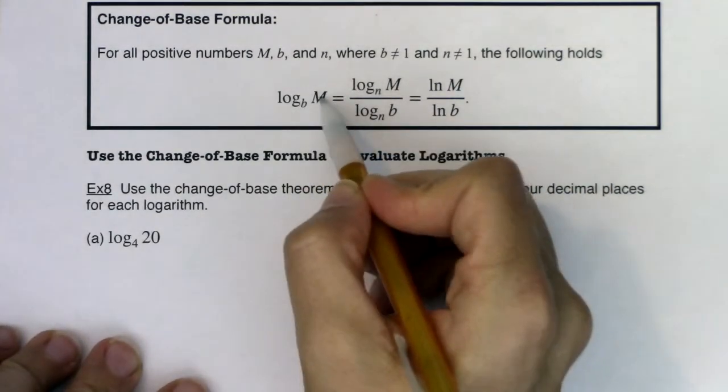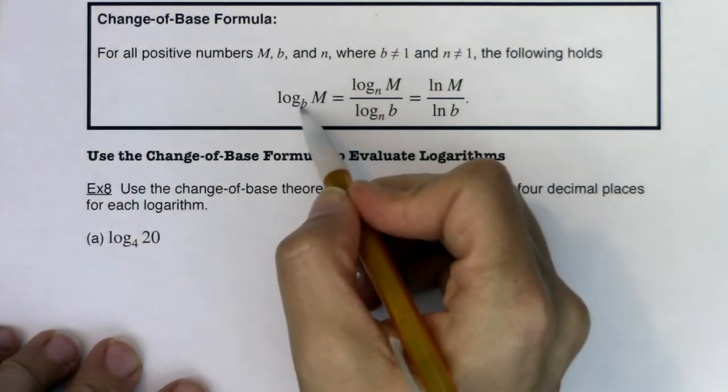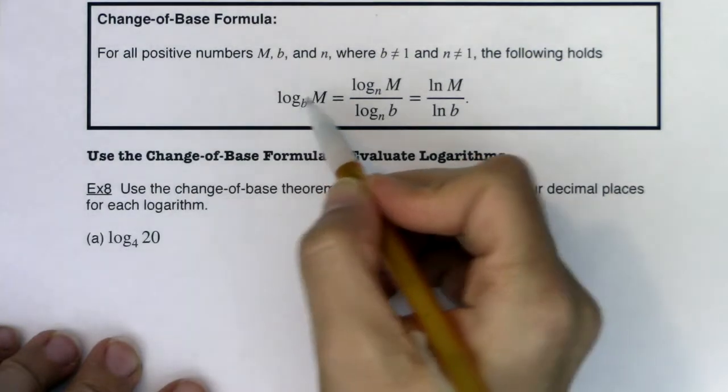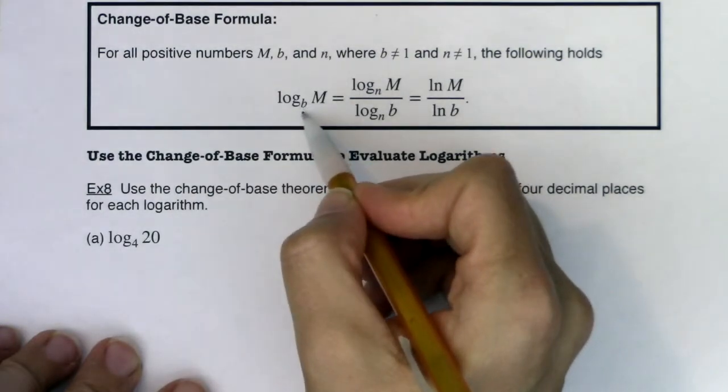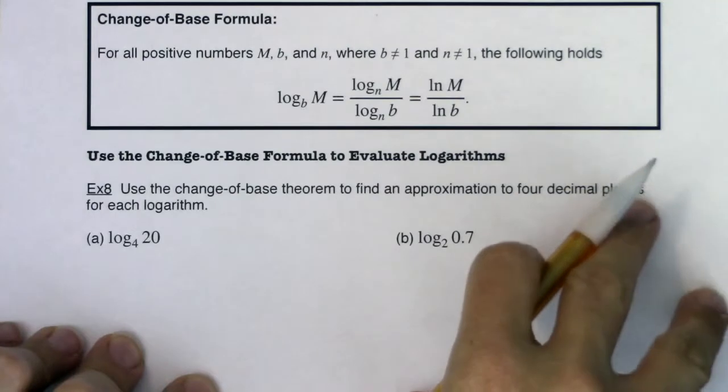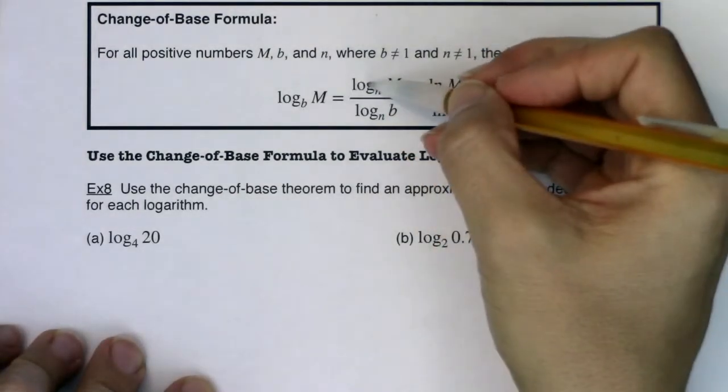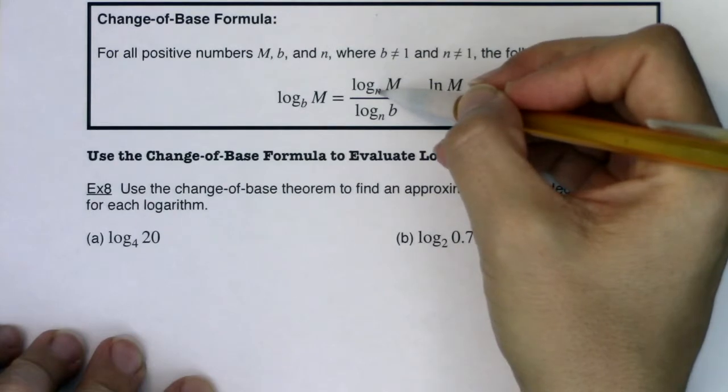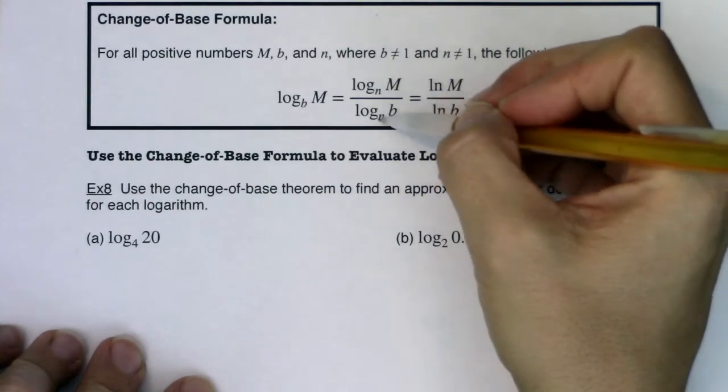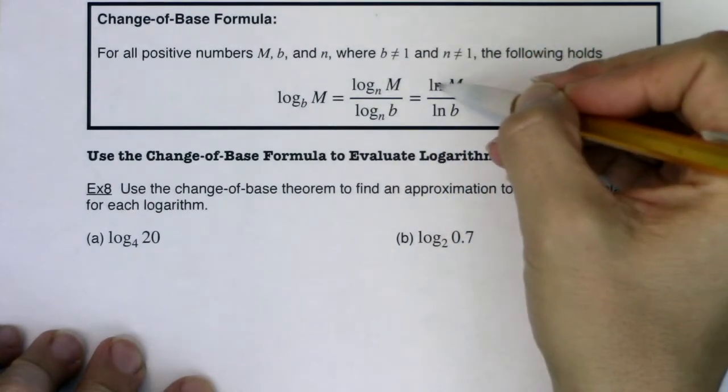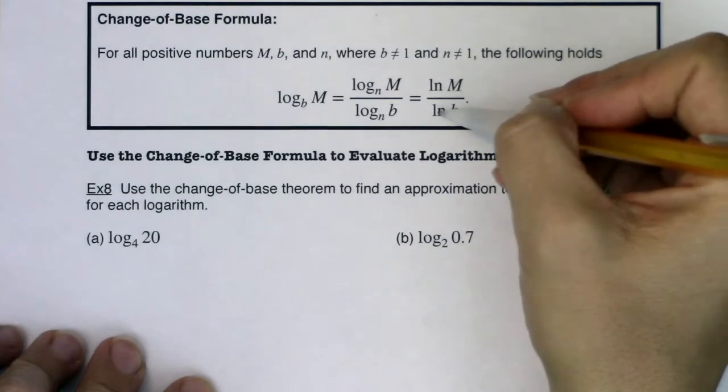If you have log base b of m, and b is something other than 10 or e, meaning you don't have a direct calculator button for it, although some of the newer calculator models do have it, you can write this as any log's base. So log base n of m over log base n of b, or you can just write it as ln of m over ln of b.